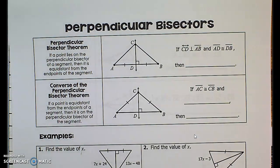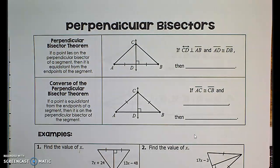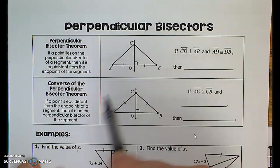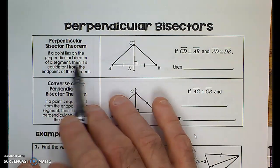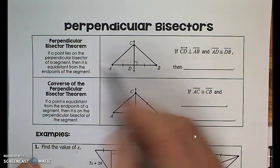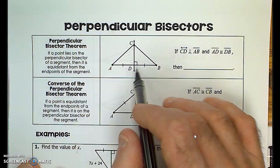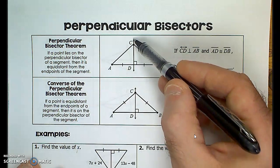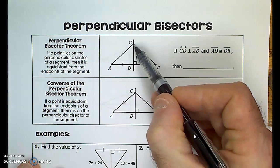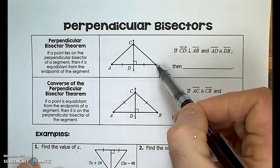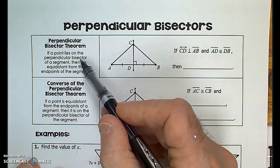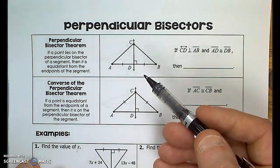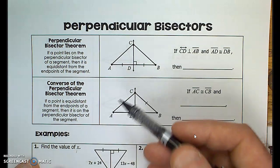Now let's talk about perpendicular bisectors. It's a line that's perpendicular to a side and divides it into two equal parts. The theorem says if a point lies on a perpendicular bisector of a segment, then it is equidistant from the endpoints of the segment. Point C is on the perpendicular bisector, so the distance from C to A is the same as the distance from C to B — that's what the perpendicular bisector theorem states. We can use our knowledge of congruence to derive it rather than just memorize it.